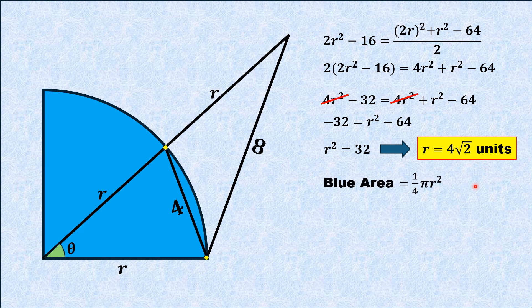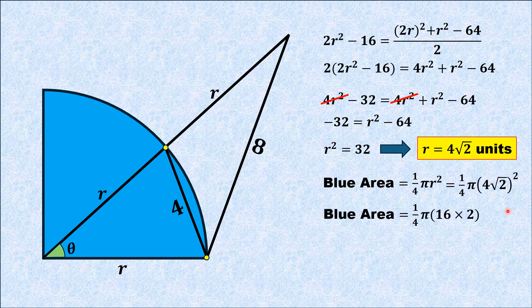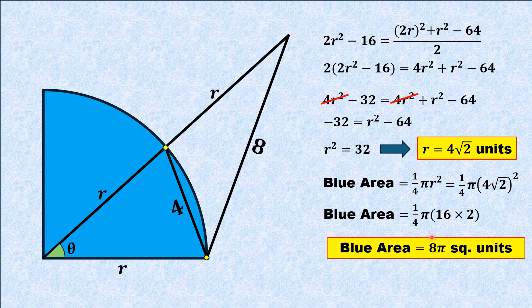The area of a quarter circle is (1/4)πr². Substituting r² = 32, we get the blue area = (1/4) · π · 32 = 8π square units. That is the answer. Thank you for watching.